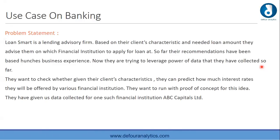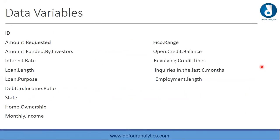They want to run a proof of concept for this idea using data collected for one financial institution, ABC Capitals Limited. In summary, the goal is to predict how much interest rate different financial institutions will offer. The data variables we'll work on include: ID, amount requested, amount funded by investors, interest rate, loan length, loan purpose, debt-to-income ratio, state, home ownership, monthly income, FICO range, open credit balance, revolving credit lines, inquiries in the last six months, and employment length.